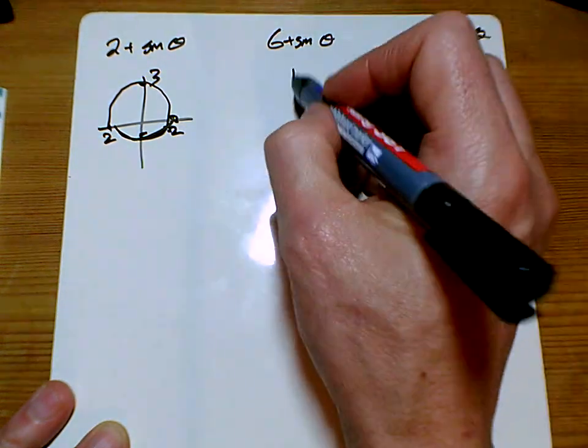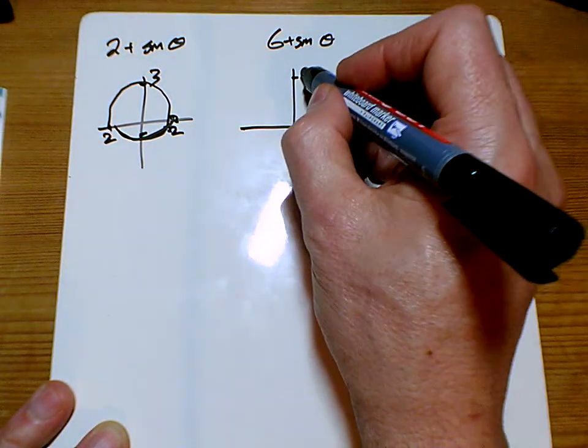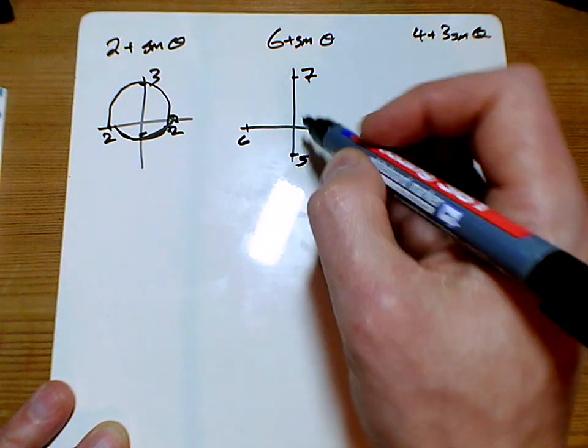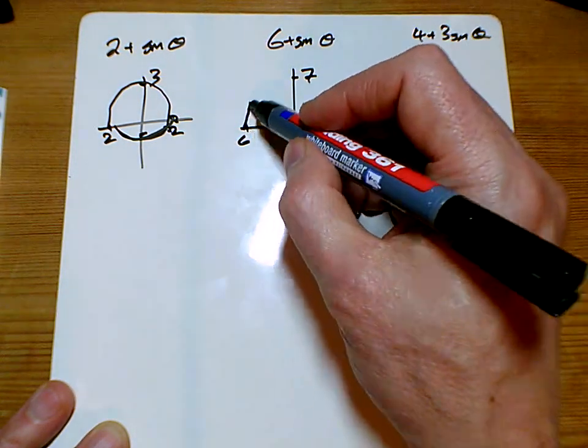The second one, it's a little bit bigger, isn't it? So it was going up to seven and six and six and five, it should go a bit lower, shouldn't it? So we got this egg shape here.